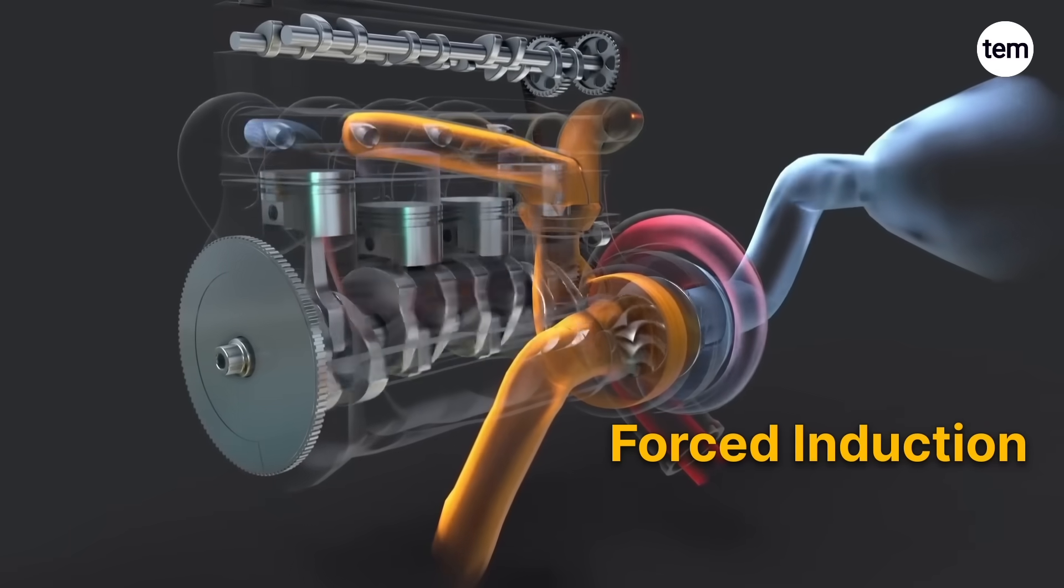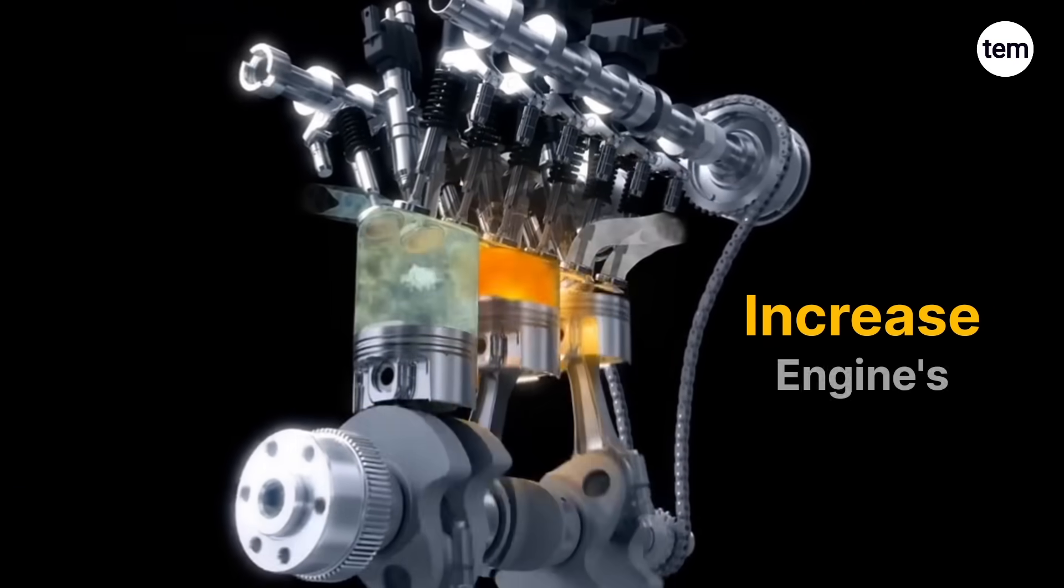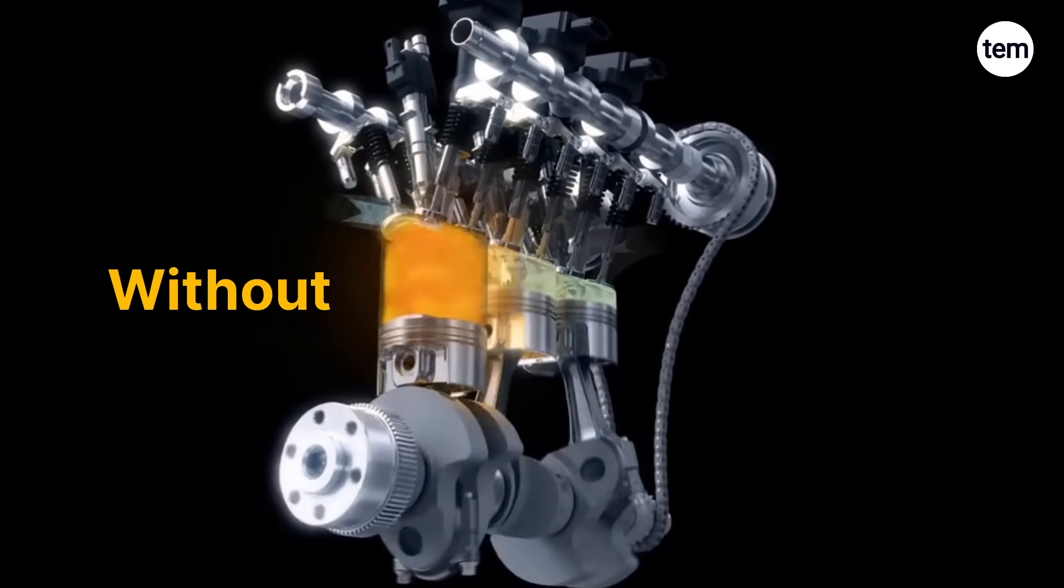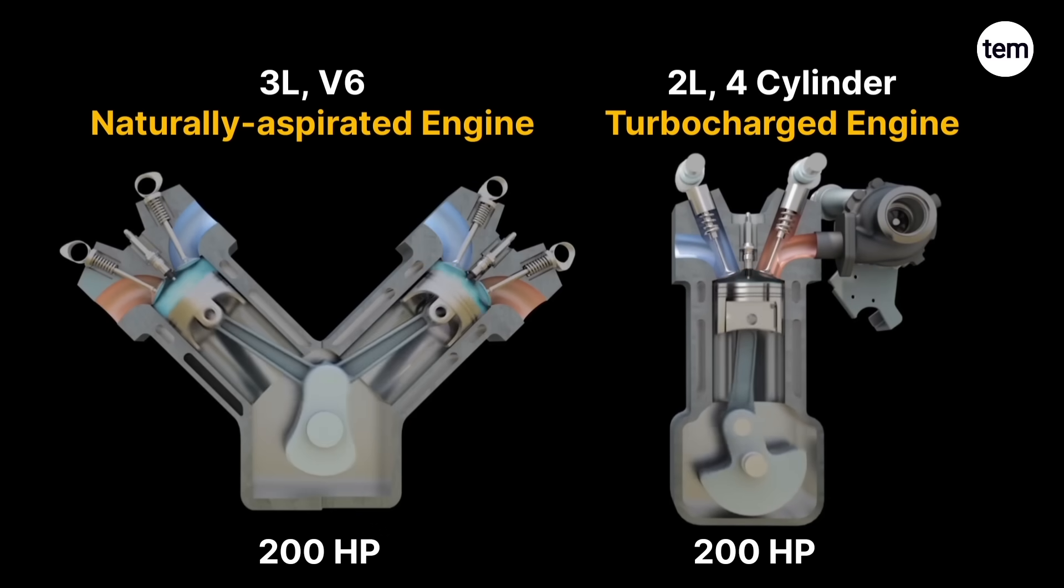A turbocharger is a turbine-driven forced induction device that forces extra air into the combustion chamber to increase an engine's efficiency and power output without increasing engine size. For example, a 2-liter 4-cylinder turbocharged engine can produce the same power as a 3-liter V6 naturally aspirated engine.